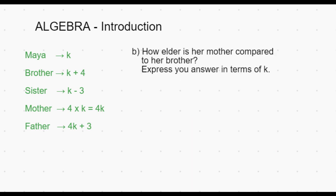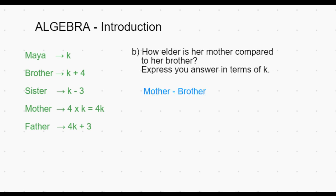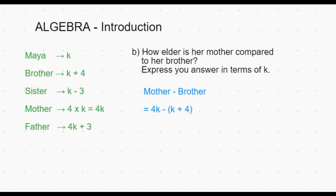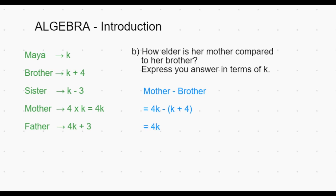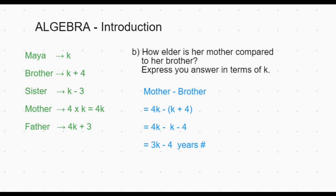Next let's look at another example. How much elder is her mother compared to her brother? Express your answer in terms of K. We need to find the difference in the ages of the mother and the brother: mother minus the brother. The age of the mother is 4K and the age of the brother is K plus 4. We put K plus 4 within brackets because the minus sign outside applies to both K and the plus 4. When we open up the bracket it becomes 4K minus K minus 4, which is 3K minus 4.